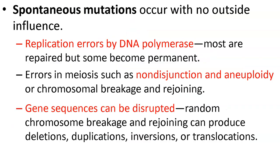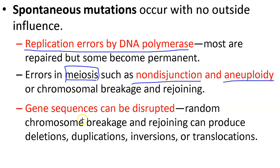Back to genetic mutations: spontaneous DNA mutations occur with no outside influence. Where do they come from? Possibly from replication errors by DNA polymerase — most are repaired, but some possibly become permanent. We already talked about meiosis and non-disjunction and aneuploidy. Problems with chromosome breakage and rejoining can disrupt gene sequences, and random events can also produce those deletions and chromosome mutations we already discussed.